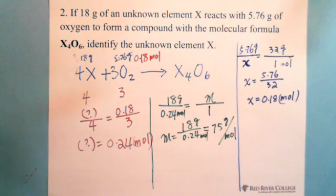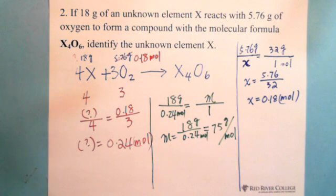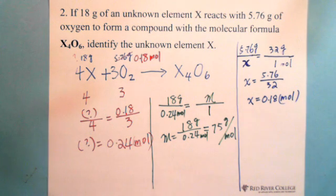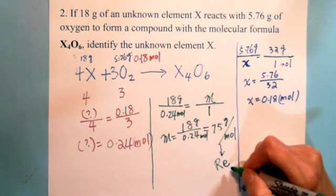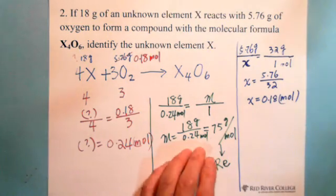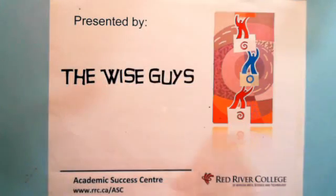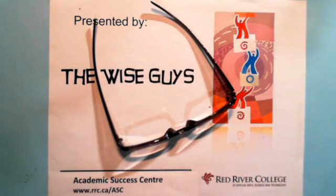If you want to know exactly what this element is, you can go to the periodic table and check this number. The molar mass of 75 corresponds to Re — Rhenium. This has been presented by Wiseguys. Thank you.